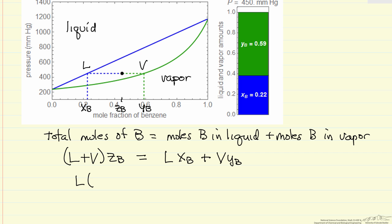So I'm going to bring the term with L to the left side of the equation, and so it ends up like so, and then the right side, I'm going to move the ZB term times vapor with a minus sign. So this is the lever rule.